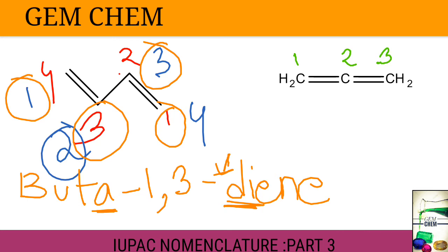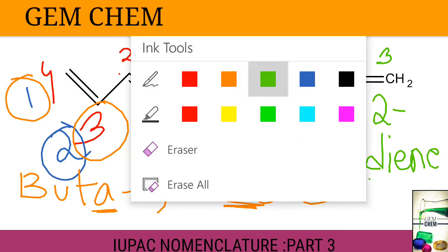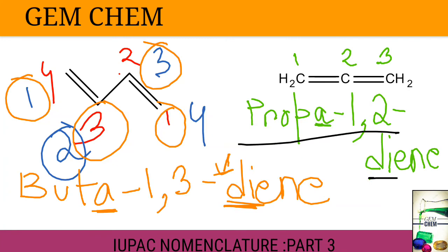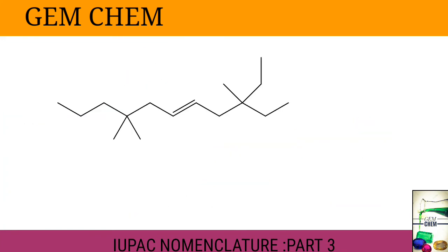Next example we will see: 1, 2, 3, right? So this one will be three carbons, so propa-1,2-diene. Now see this one: since it is D, propa A is not dropped. So this name is for this one and this name is for this molecule.